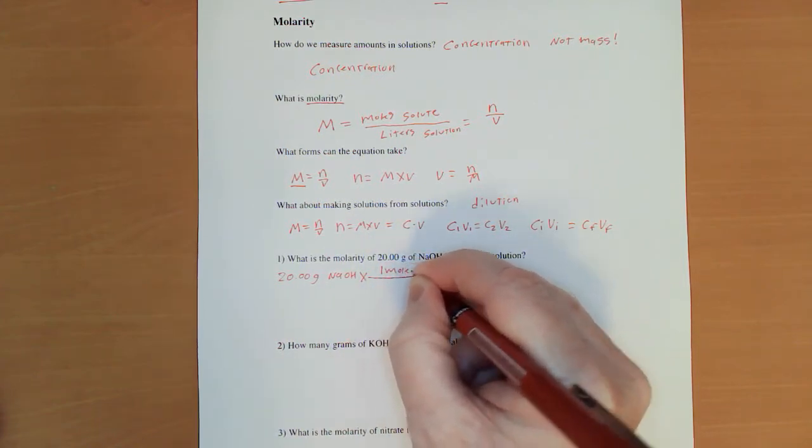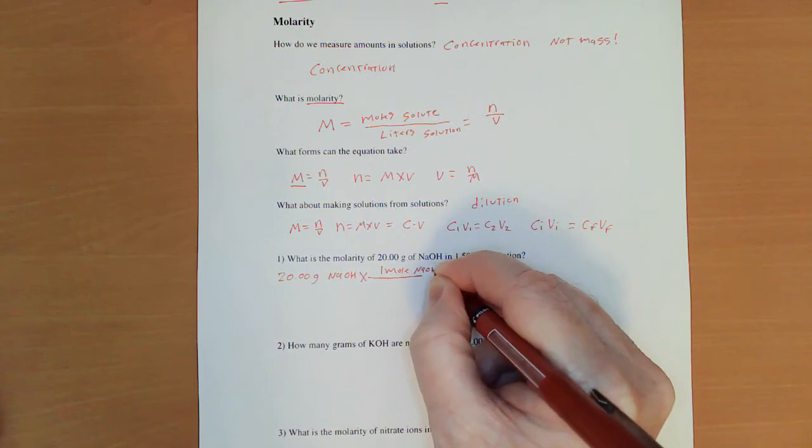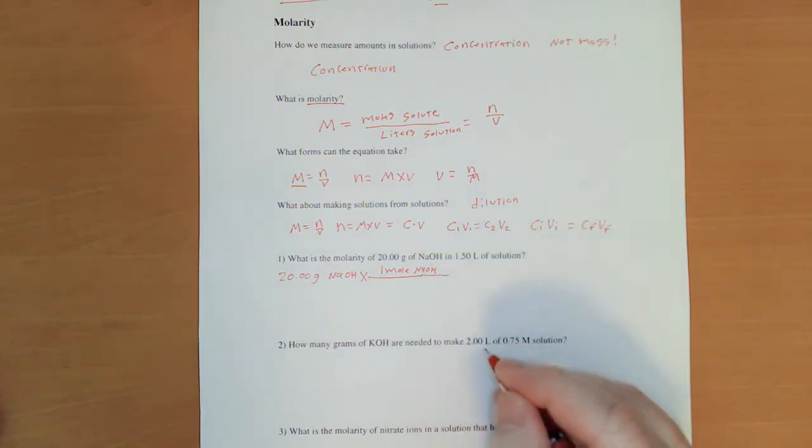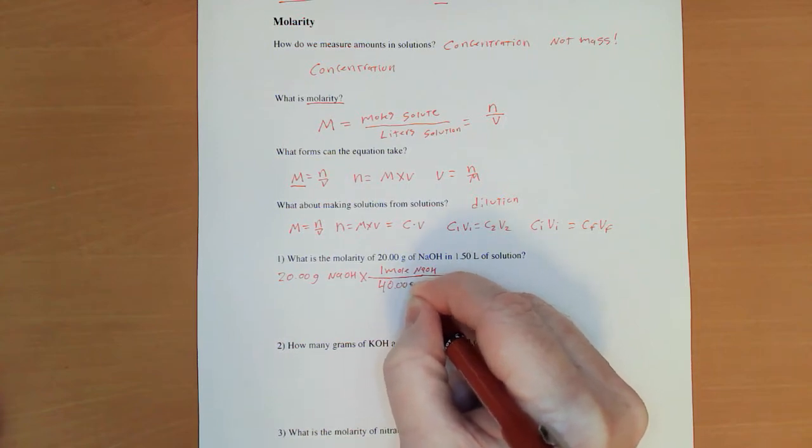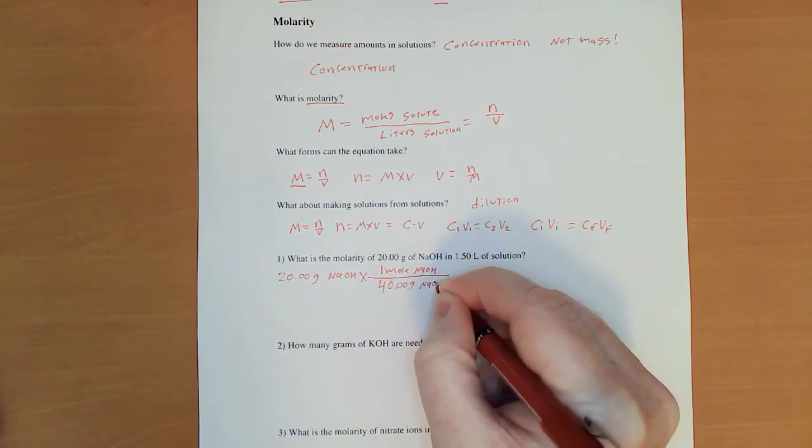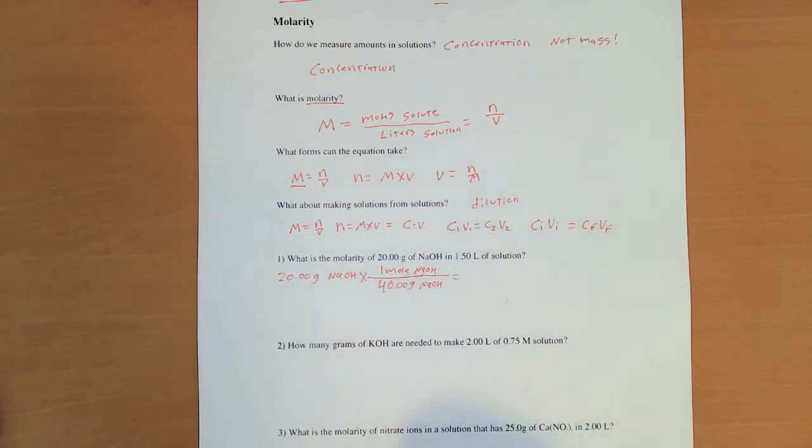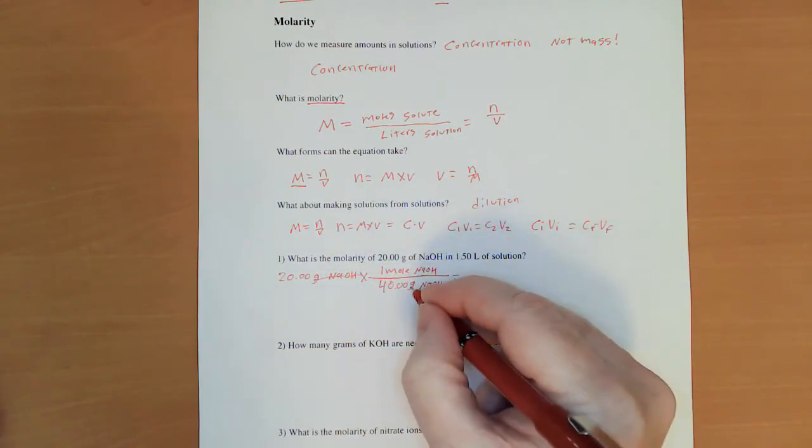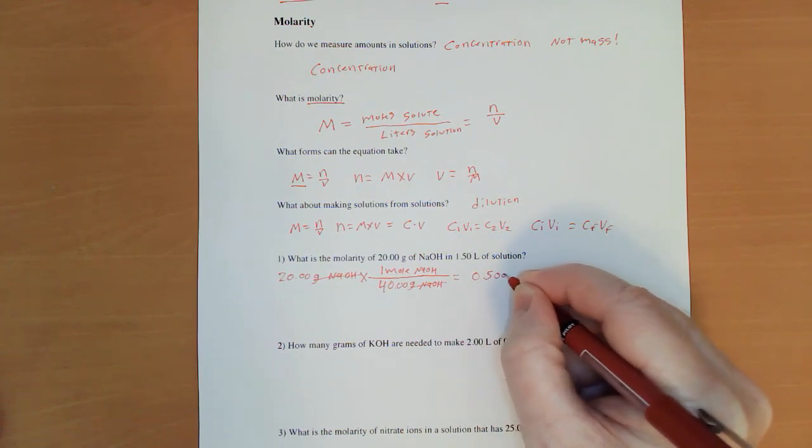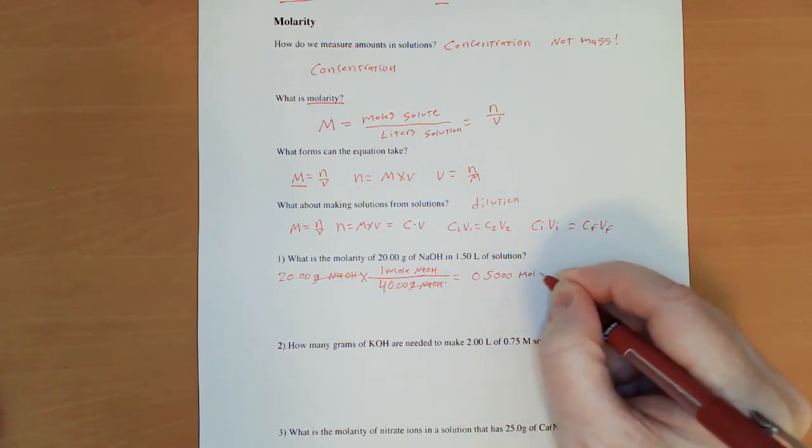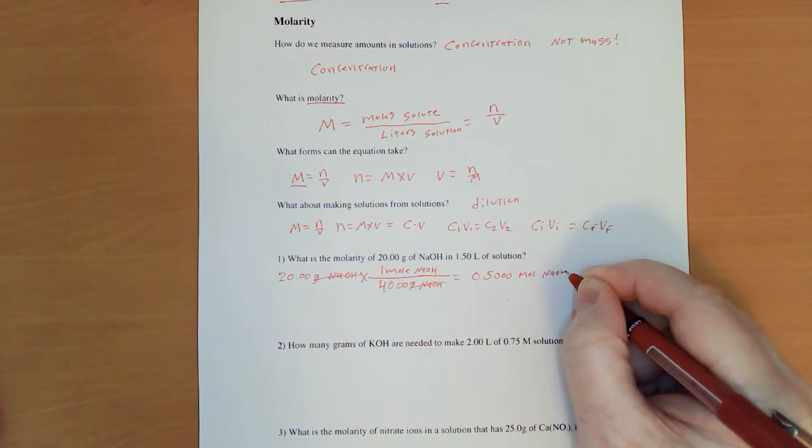We'll take our 20.00 grams of NaOH and we'll convert it into moles. One mole of NaOH. The molar mass of NaOH is actually a convenient number. It's 40.00 grams of NaOH. Those cancel. This ends up equaling 0.500 moles NaOH.